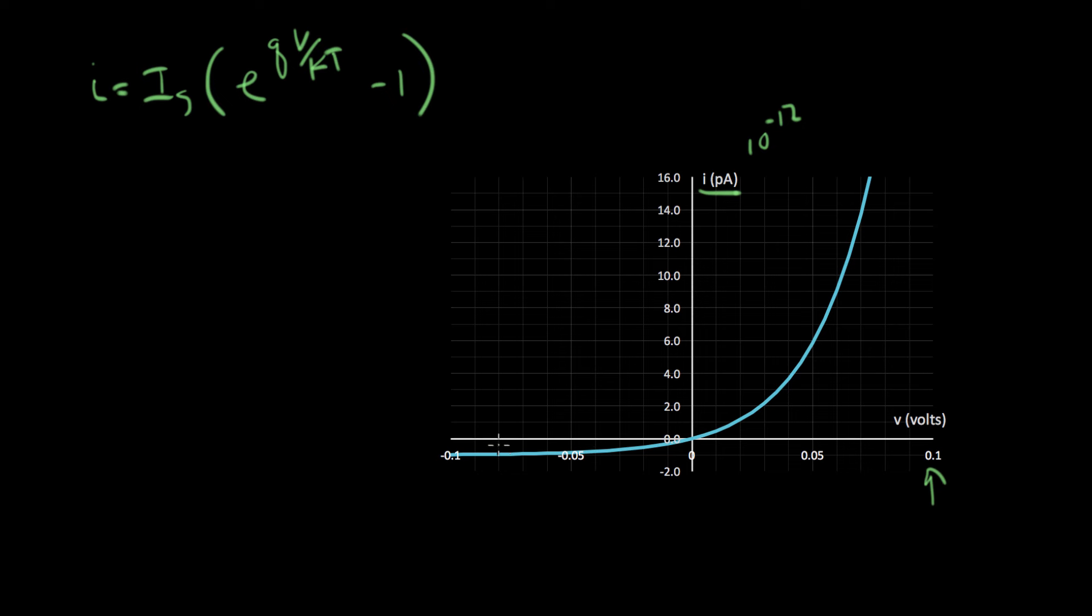And over here, there's a little bit of an offset. There's a little tiny current in the reverse direction when the voltage is negative. And this amount here, that's IS flowing in the negative direction in the diode.